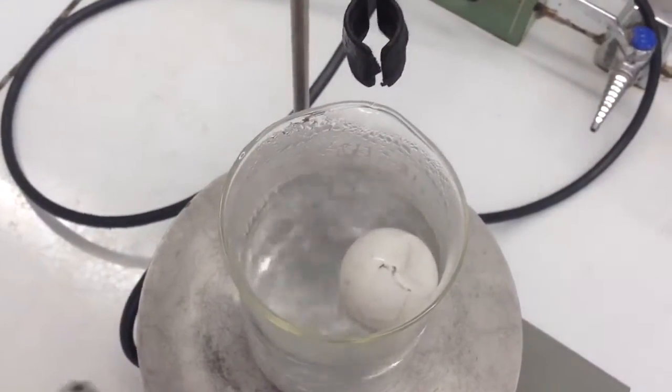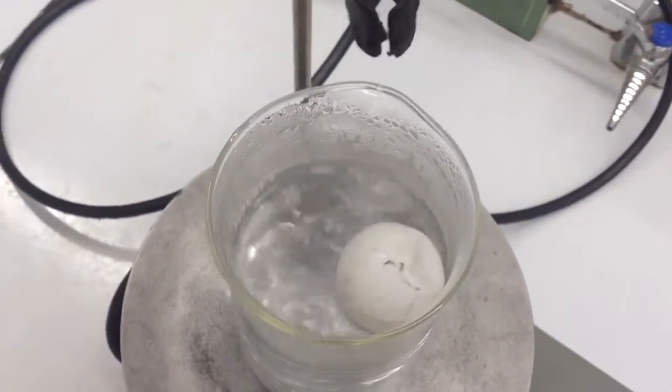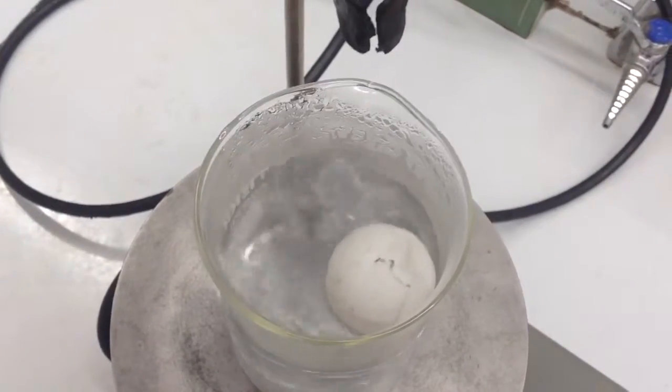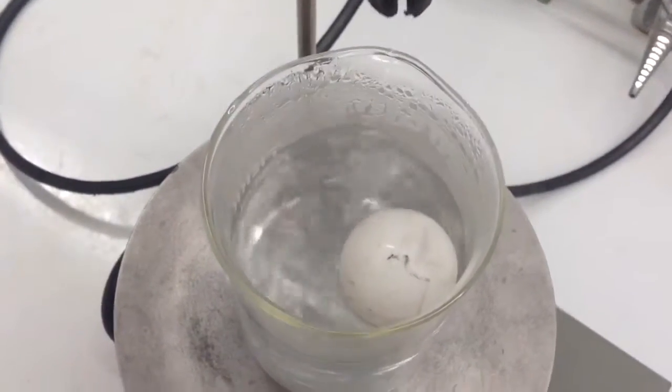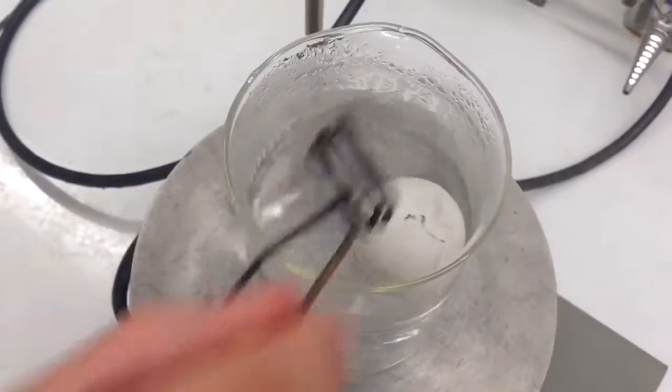Since temperature and volume are directly proportional, one increases, the other increases. When the ping-pong ball is placed in the boiling water, the temperature inside the ball rises, which makes the volume of the air inside the ball expand. So that's why the ping-pong ball will regain its shape.